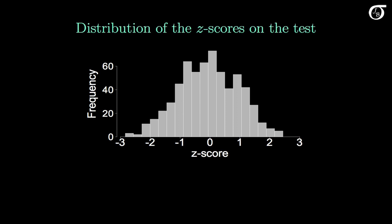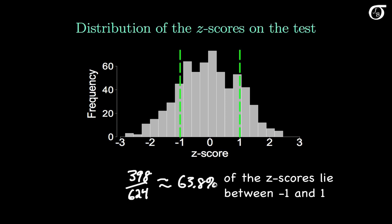Let's go back to the z-scores on the test. I'd call this, roughly speaking, a mound-shaped distribution. Let's see how closely the empirical rule fits this distribution. Drawing lines corresponding to z-scores of minus 1 and 1, if we go to the raw data and count the z-scores that lie between minus 1 and 1, we'd see that 398 of the 624 z-scores — approximately 63.8% — lie between minus 1 and 1. This is a little less than the 68% from the empirical rule, but it's still in the neighborhood.